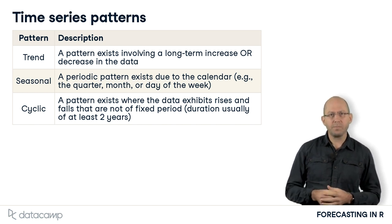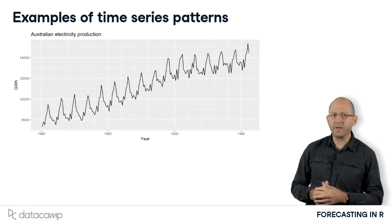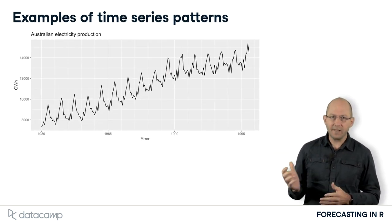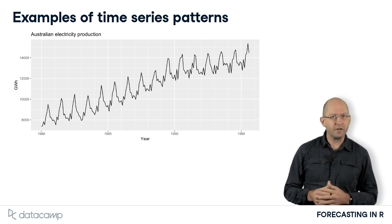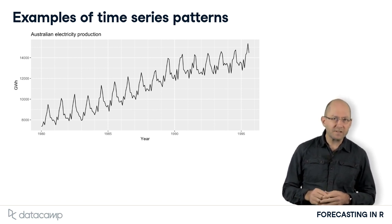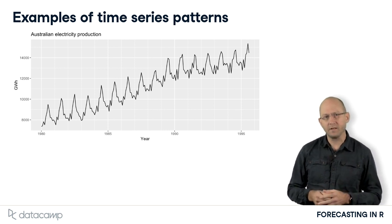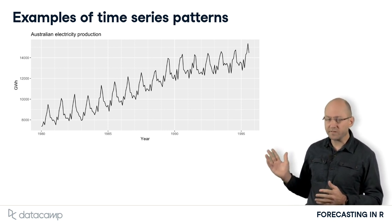It is probably easiest to see what I mean with some examples. This is monthly Australian electricity production. It is clearly trended, with a change in the slope of the trend around 1990. It is also seasonal. Notice how the seasonal pattern changes a little over time, with a little more volatility in the trough at the end of this period than at the beginning. There is no cyclic behaviour visible in this graph.